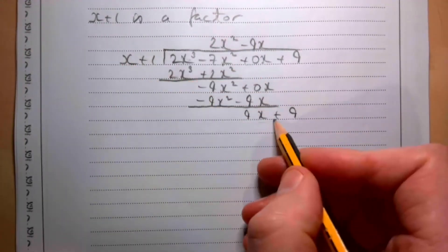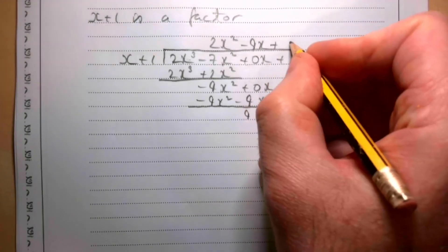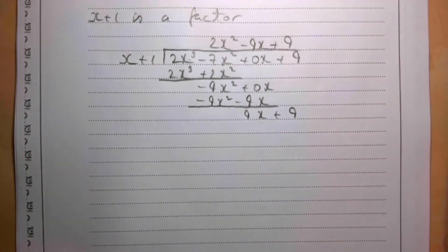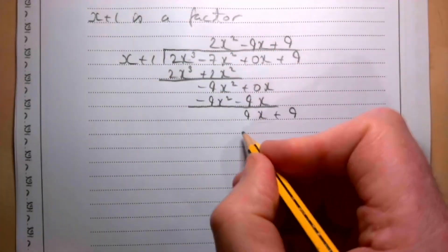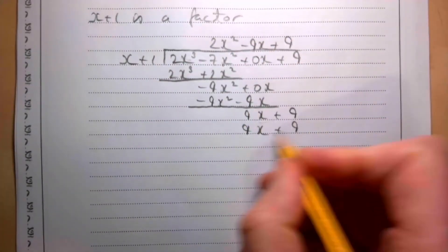x into 9x is 9. 9 times that gives me 9x + 9, encouragingly, and that gives me 0.